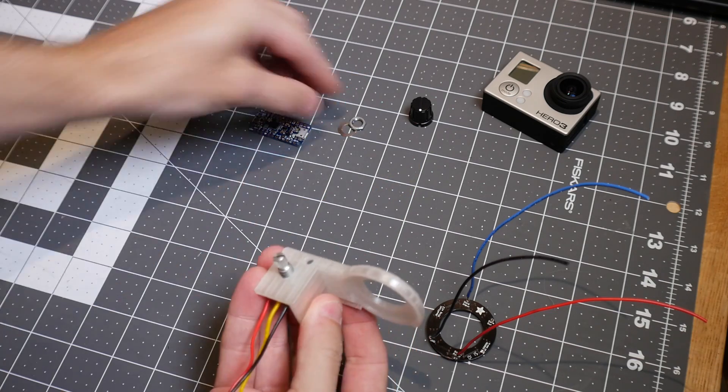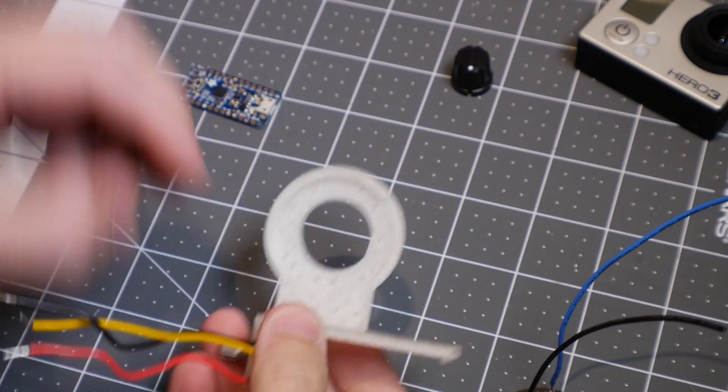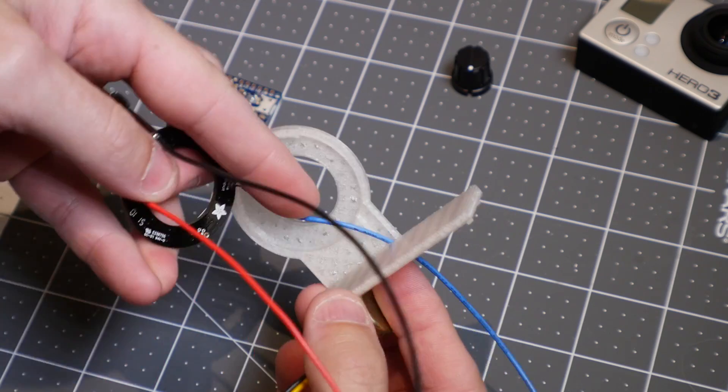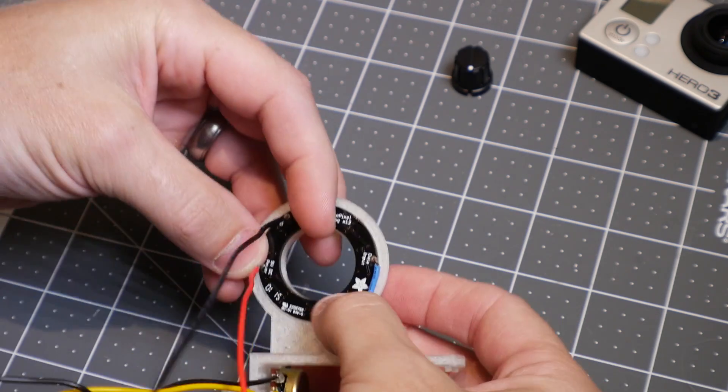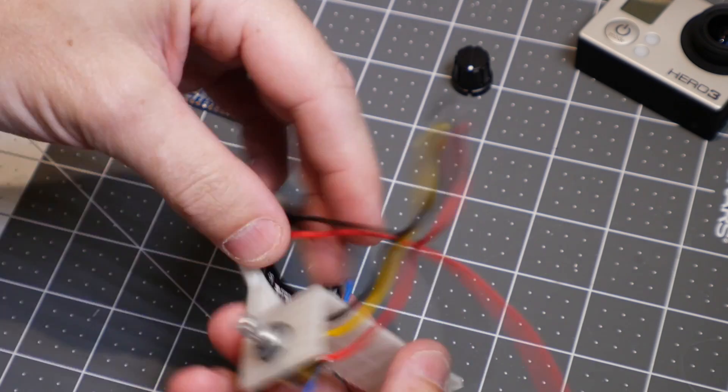I went through several iterations of this piece because I didn't want to cover any of the buttons or the ports on the GoPro itself. The potentiometer and the trinket go underneath the GoPro, but the ring has to go in the front of it. I made some slots and some holes to feed the wires through. That would help it sit as closely to the camera body as possible.